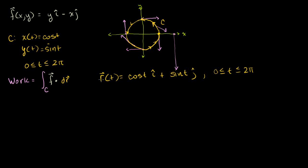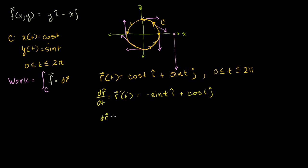Let's compute the derivative of our position vector function with respect to t. dr/dt, also written as r′(t), equals the derivative of x(t) with respect to t, which is −sin(t)·i, plus the derivative of y(t) with respect to t, which is cos(t)·j. Multiplying through by dt, we get dr = −sin(t)dt·i + cos(t)dt·j.